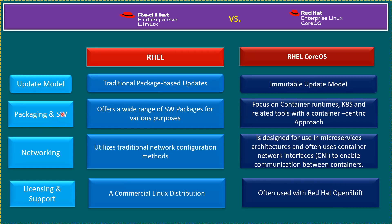On packaging and software: RHEL offers a wide range of software packages for various purposes and utilizes traditional package management systems such as RPM (Red Hat Package Manager) or DNF Package Manager — DNF being the latest version of YUM. CoreOS is mainly focused on container runtimes, Kubernetes, and related tools with a container-centric approach. For networking, RHEL utilizes traditional network configuration methods, while CoreOS is designed for microservices architecture and often uses the Container Network Interface (CNI) to enable communication between containers.